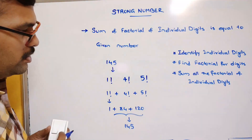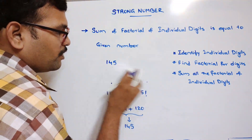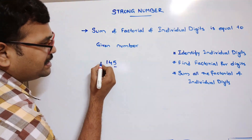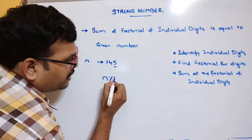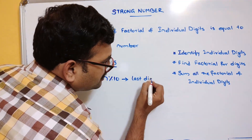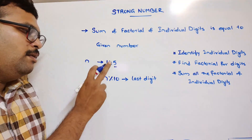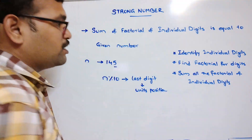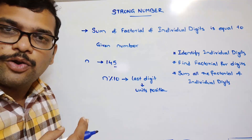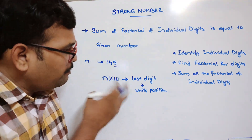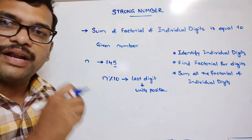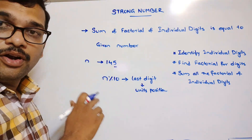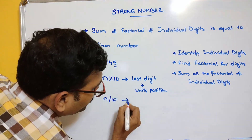In order to identify the individual digits, if you want to get the last digit — say 5 — consider the number as n and apply n mod 10. That will give the last digit, which is the units position. Just remember this, because it is also useful when solving palindrome, Armstrong, or number-reverse programs. n mod 10 always gives you the units position.